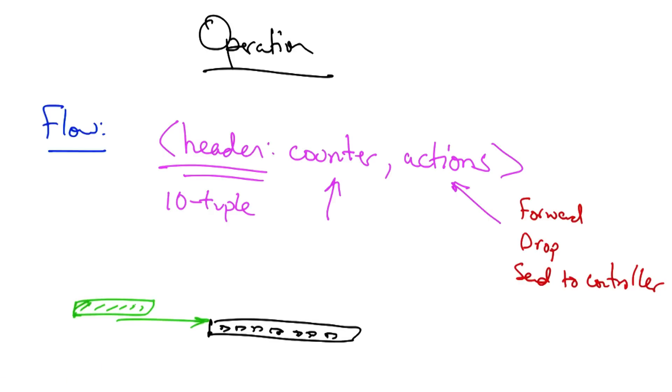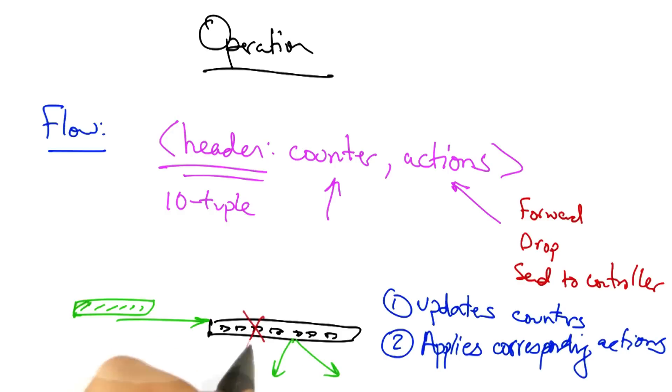When a switch receives a packet, it updates its counters for counting packets that belong to that flow and applies the corresponding actions for that flow, which might include forwarding, dropping, or sending to a controller.